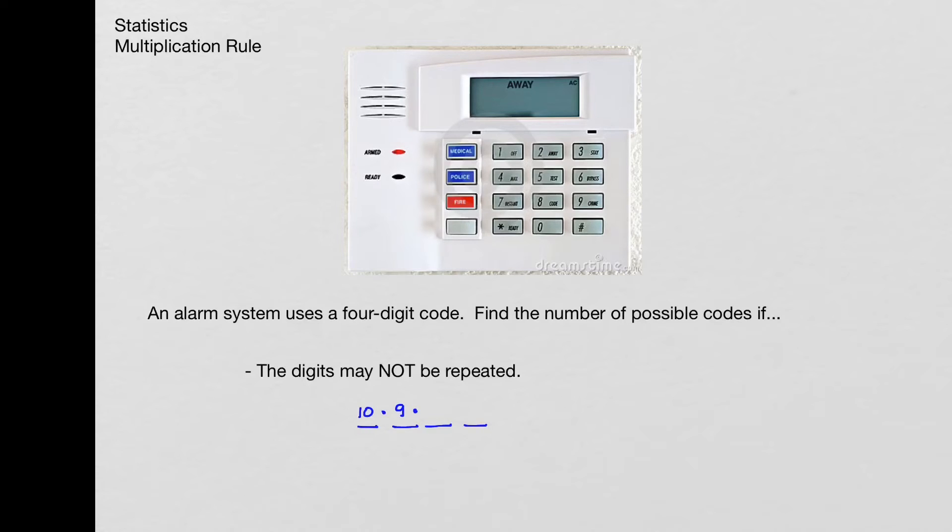And then the next one, there'll be eight, and then the next one, there'll be seven. And so when I multiply ten times nine times eight times seven, I get 5,040. So you can see, by just not allowing the digits to be repeated, we almost cut the number of possibilities in half, which is kind of interesting and maybe a little unexpected.